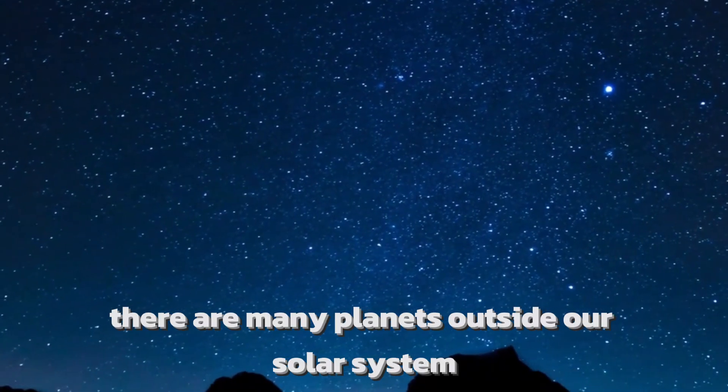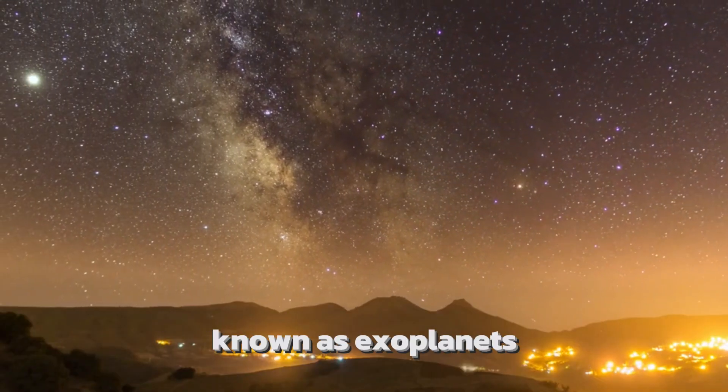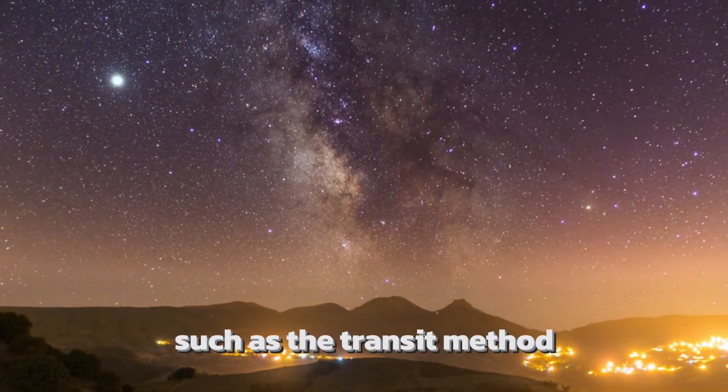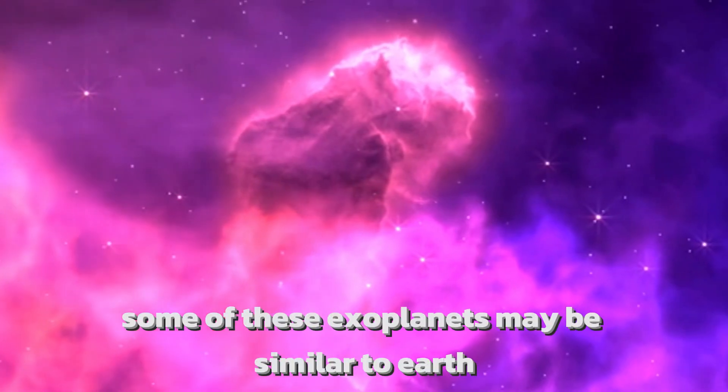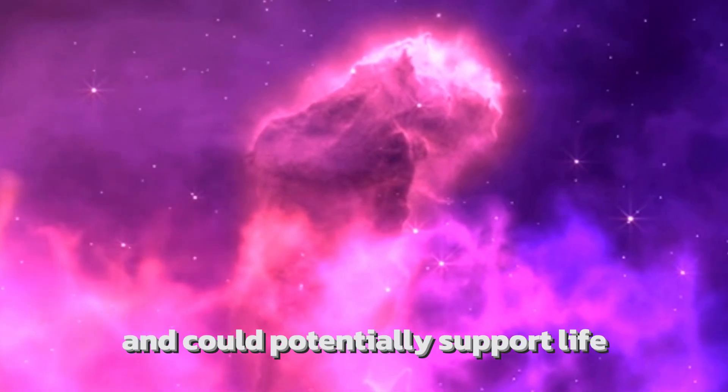There are many planets outside our solar system known as exoplanets that have been discovered using techniques such as the transit method and the radial velocity method. Some of these exoplanets may be similar to Earth and could potentially support life.